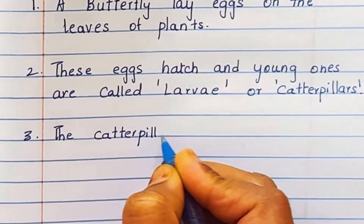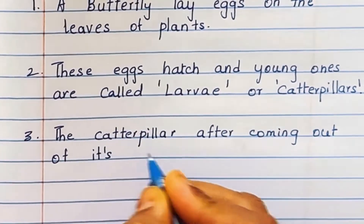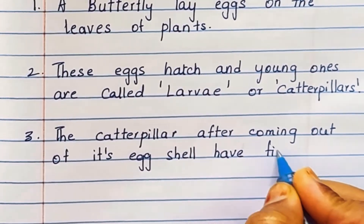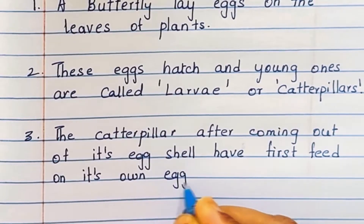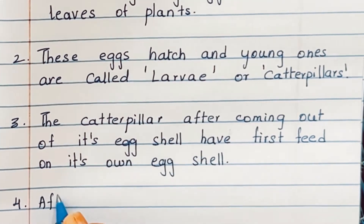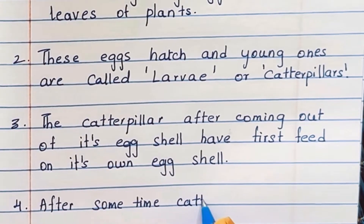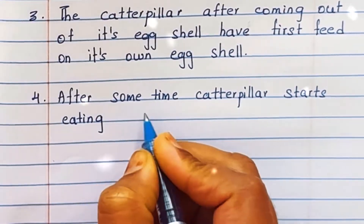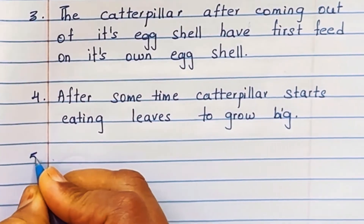Third point: the caterpillar, after coming out of its egg shell, has to first feed on its own egg shell. Fourth point: after some time the caterpillar starts eating leaves to grow big.